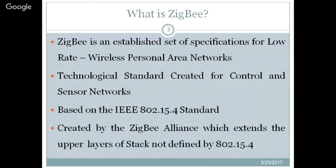ZigBee is an established set of specifications for low-rate wireless personal area networks — a technological standard created for control and sensor networks. It is based on IEEE 802.15.4. The ZigBee Alliance extends the upper layers of the stack not defined by 802.15.4: IEEE defines only the physical and MAC layers, while the network, security, and application layers are defined by the ZigBee Alliance.